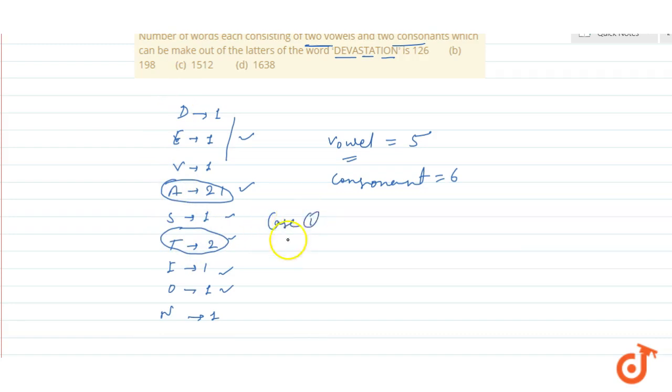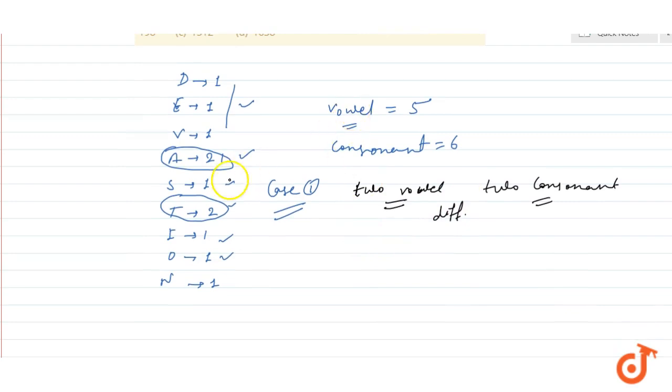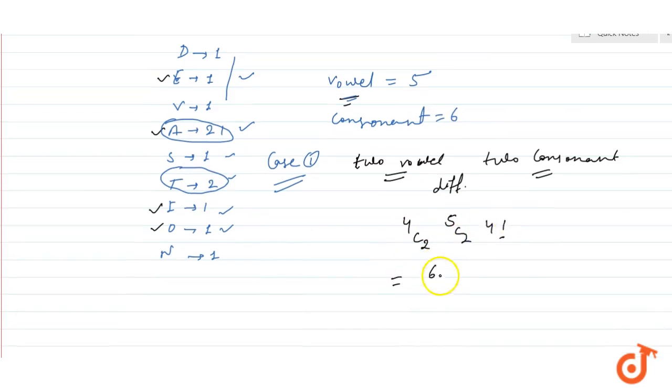Case 1: When we need to select from 4 letters where both vowels are different and both consonants are different. Total different vowels are 4: A, E, I, O. From these four select 2. Total consonants are 6 but different consonants are 5, so 5C2. Then arrange with 4 factorial. So this is 6 into 10 into 24, which is 1440.